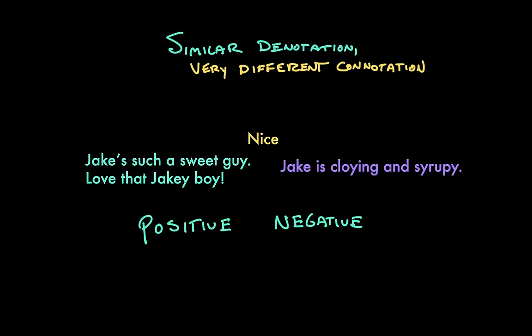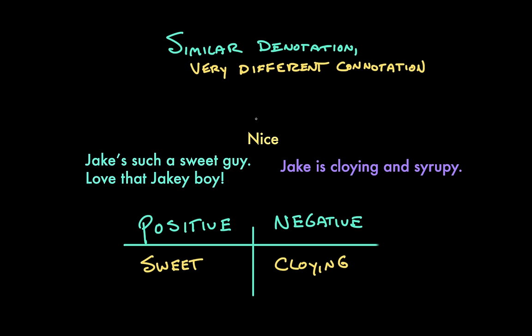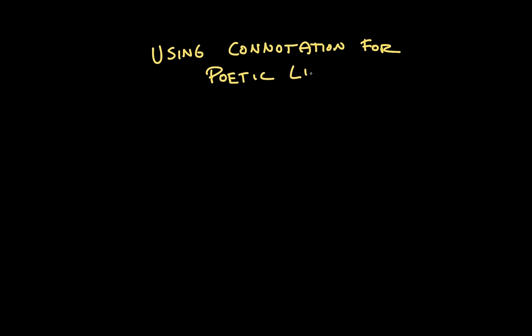Some words will have neutral or uncertain connotations, and that's okay too. But it doesn't just have to be straightforwardly positive, negative, or neutral either. You can also use connotation for the sake of poetic license or building a motif.